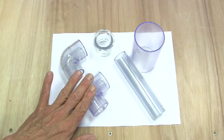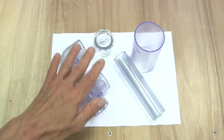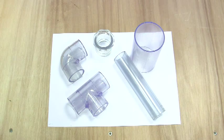There are elbows, tees, reducing bushes, end caps, and also some threaded fittings.